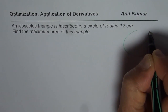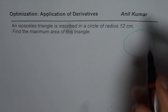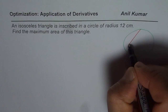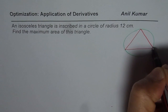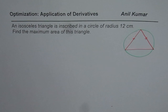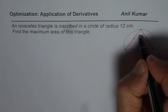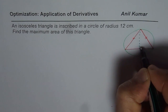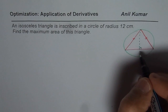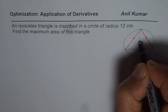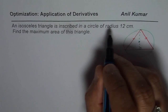We have a circle, and within this circle we have one isosceles triangle. An isosceles triangle means two sides are equal. Let us say these are the equal sides — that's the isosceles triangle for us. Let me drop a perpendicular from the top. So imagine this is a perfect circle in which we have a triangle, with three vertices on the circle.